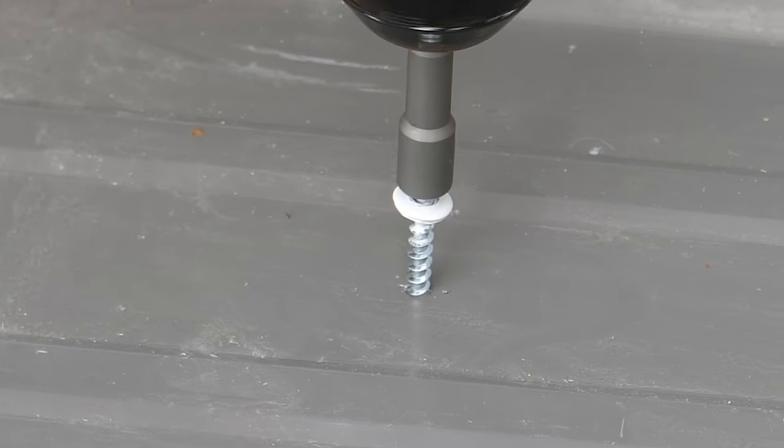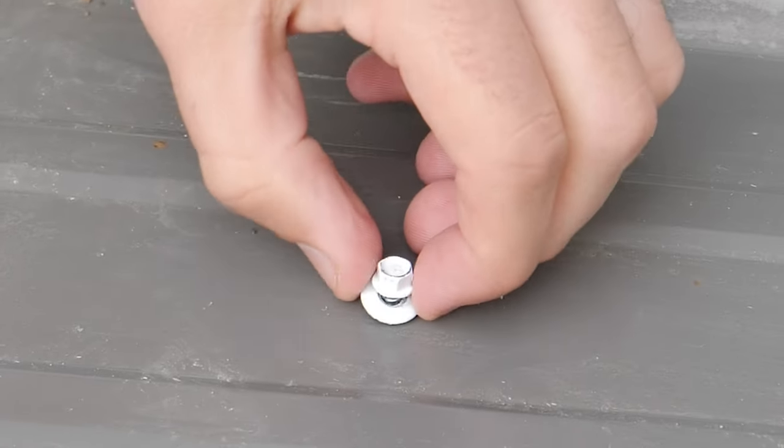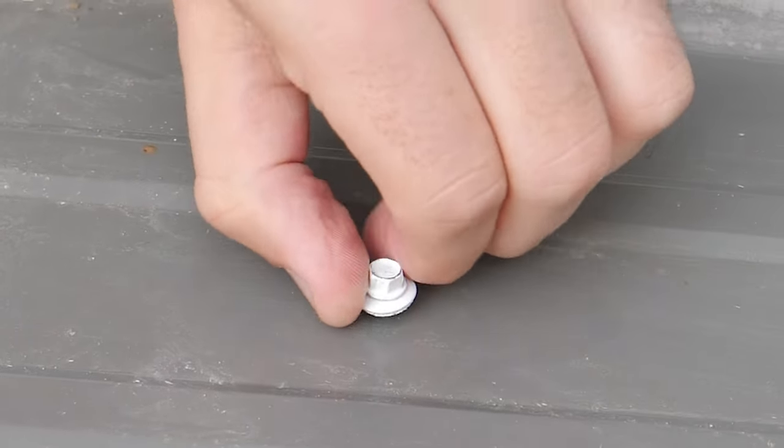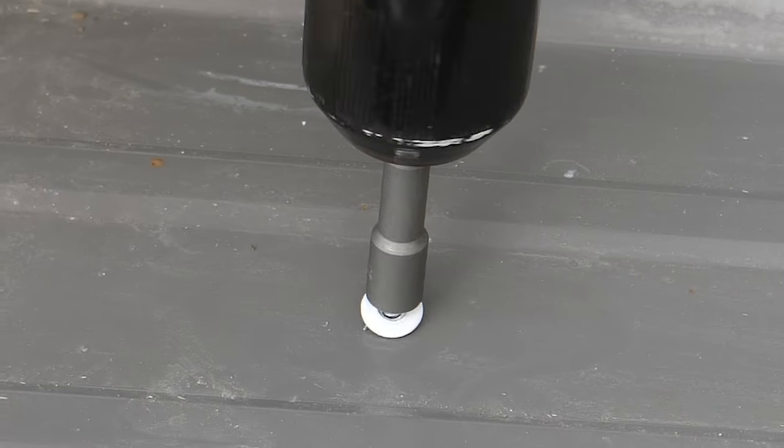Under tightening the screw is a mistake that can result in leak points that cause damage. If the washer can be spun after you drill the screw, it's under tightened. After some practice, it becomes easier to find how deep you need to drill the screw into the substrate.